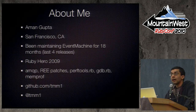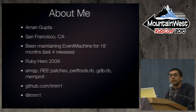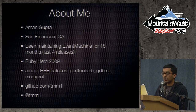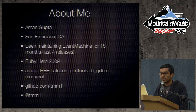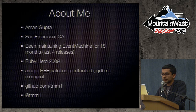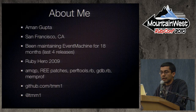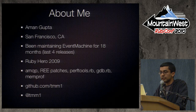About me: my name's Iman, I live in San Francisco. I've been maintaining Event Machine for 18 months now and was responsible for the last four releases. There's another release coming up probably in the next two weeks. I work on a bunch of other projects — mostly lately it's been performance and debugging stuff for MRI. You can follow me on GitHub and Twitter.